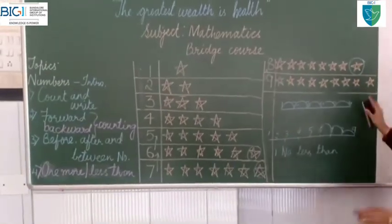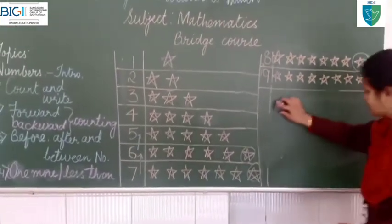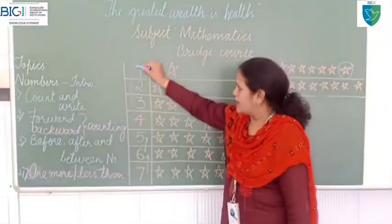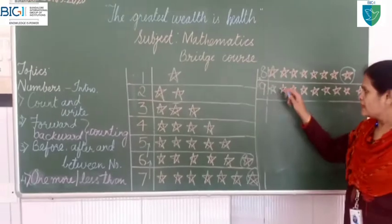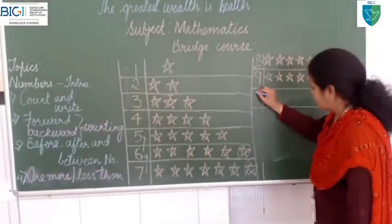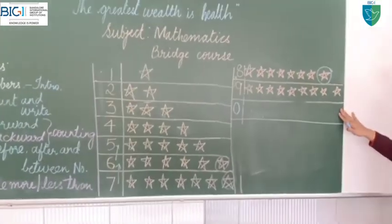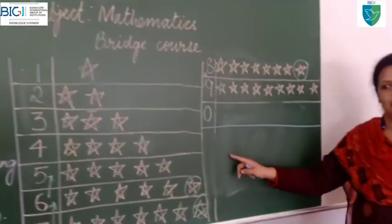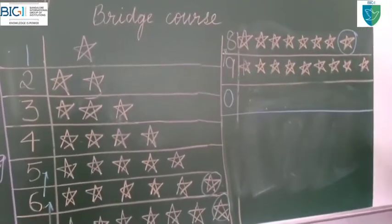As of now, you have revised numbers from 1 to 9, in which the smallest number is number 1, and the biggest single-digit number is number 9. Now, there is a small thing to tell you. You all know this number — this is 0. I have not drawn any star in this box. That means number 0 has no value on its own. If there is nothing, that means it is 0.